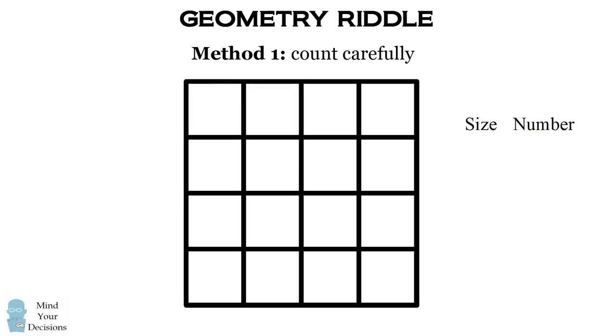Now we'll count the number of squares of different sizes. There's exactly one square that's 4 by 4, that's the big square. And then we'll count down the number of squares of smaller sizes.